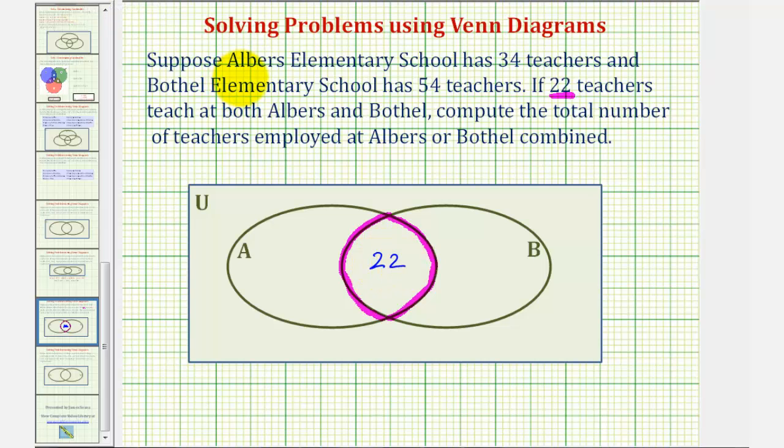Now we're also told that Albers has 34 teachers, which means there are 34 teachers in set A, but notice how 22 of the 34 are already accounted for here. Therefore, 34 minus 22 will give us the number of teachers that only teach at Albers, which would be the number of teachers in this region here. These teachers only teach at Albers, and since 34 minus 22 equals 12, we know there are 12 teachers that only teach at Albers.